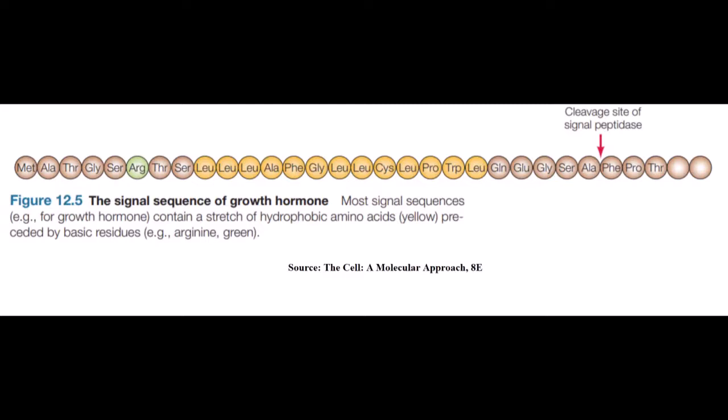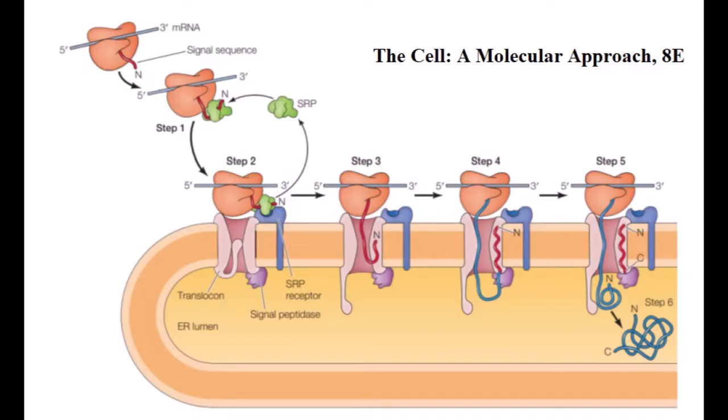In the targeting process, the very first step is the signal sequence being recognized by the signal recognition particle, called SRP. In the second step, the SRP takes the complex to the endoplasmic reticular membrane where it binds to the SRP receptor.